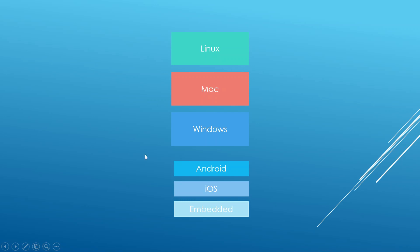In this course we're going to focus on Linux, Mac, and Windows — the main leading desktop platforms. We're not going to talk about mobile or embedded platforms, because for those it is really preferable to write your user interfaces in Qt Quick. This course is about C++ GUI development, which is more relevant to desktop platforms.